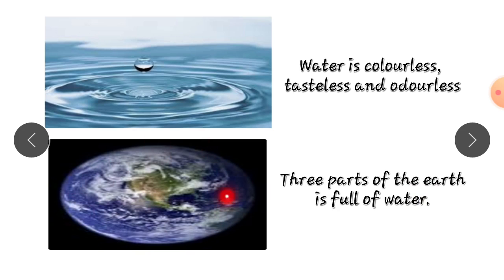Three parts full of water, just one part is land. That means 75% of the earth is water, and just 25% is land.